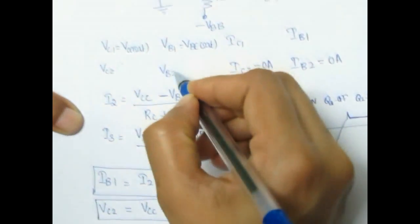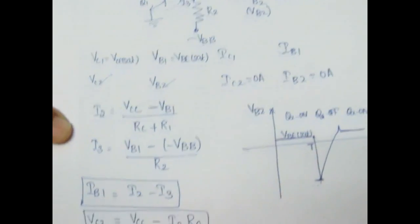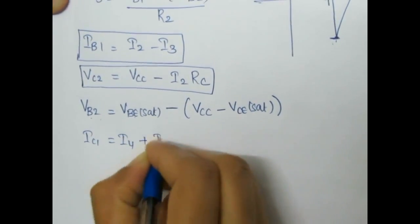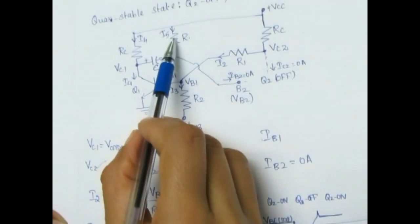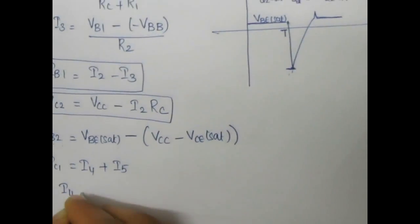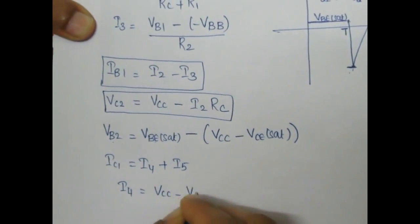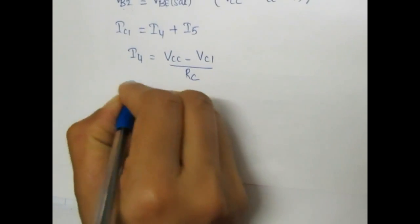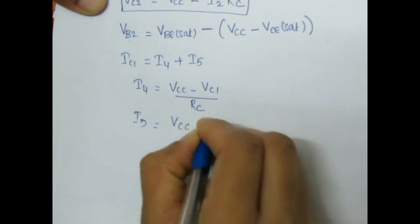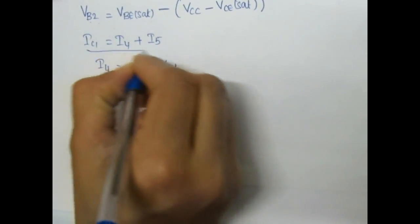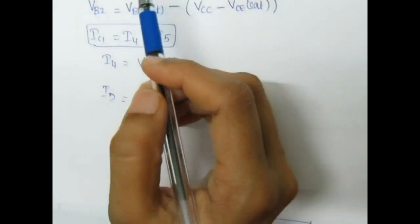IC1 is equal to I4 plus I5. Since Q2 transistor is off, whatever current flows through R will flow through Q1 transistor. I4 is given by (VCC − VCE1)/RC, and I5 is equal to (VCC − VB2)/R. If we know I4 and I5, we can find IC1. These voltages and currents are called the quasi-stable state voltages and currents. Thank you.